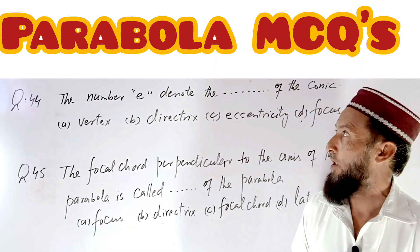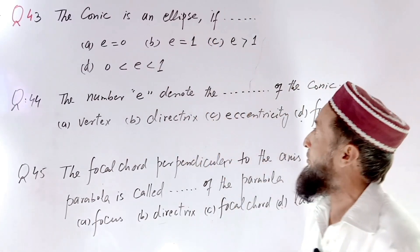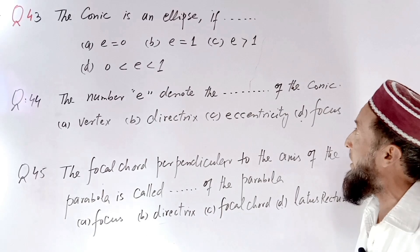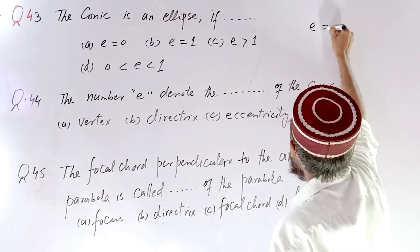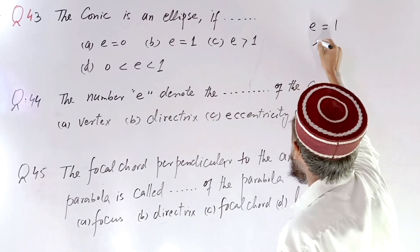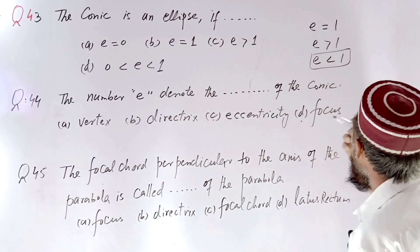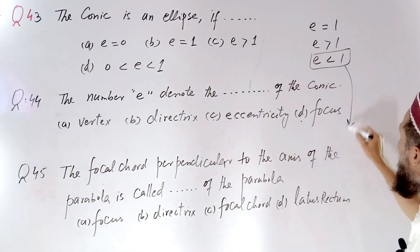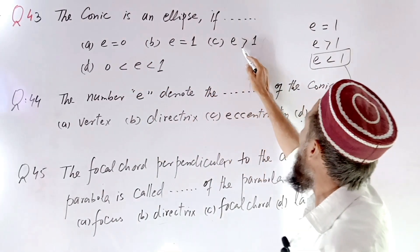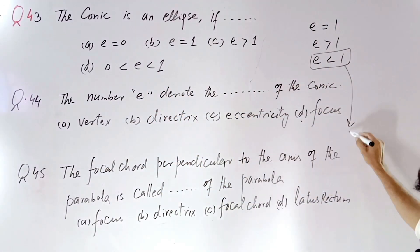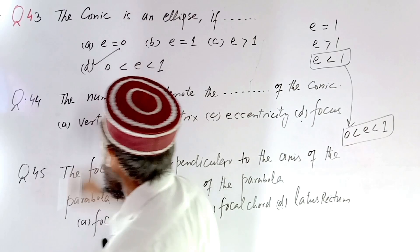Today we are proceeding to the next MCQs on the topic of parabola. We have already discussed about the ellipse. Eccentricity e less than or equal to 1 is ellipse; e equal to 1 is parabola; e greater than 1 is also a type of conic. If e equals 0, that is a circle. For e less than 1, that is ellipse, so option B is the correct option.